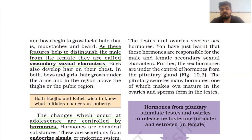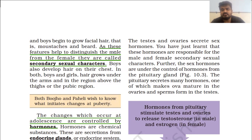The testes and ovaries secrete sex hormones. These hormones are responsible for the male and female secondary sexual characters. These hormones are also responsible for the development of reproductive organs and reproductive functions in humans.